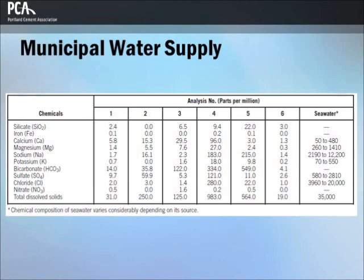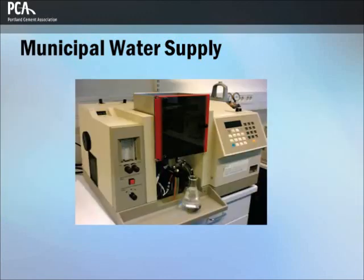Municipal water supply systems get their water from a variety of locations, including aquifers, lakes and rivers, and the sea through desalination. Six typical analyses of city water supplies and seawater are shown in a table; these approximate the composition of domestic water supplies for most cities over 20,000 population in the United States and Canada, and water from any of these sources is suitable for use in concrete. An atomic absorption spectrophotometer can be used to detect concentration of elements in laboratory analysis of water. Municipal water is purified, disinfected through chlorination, and sometimes fluoridated prior to use as drinking water.